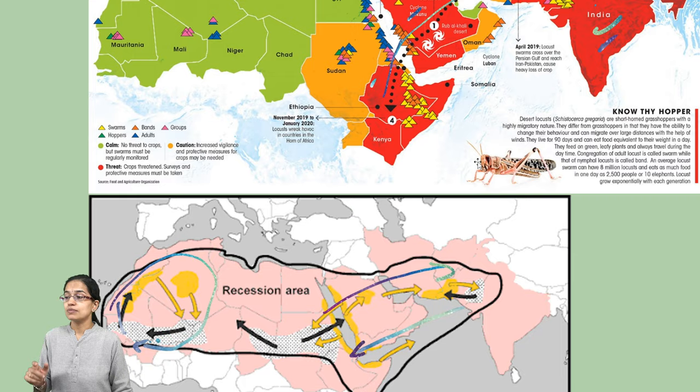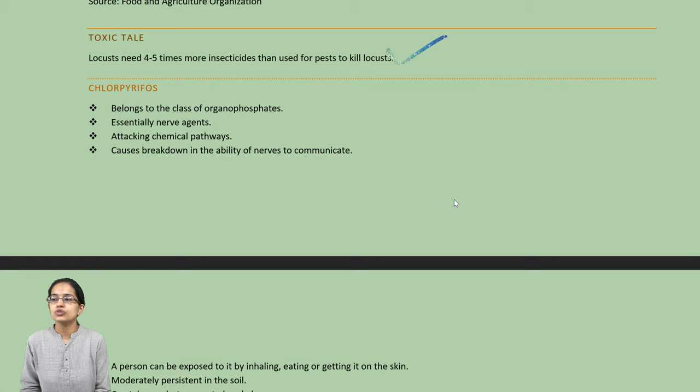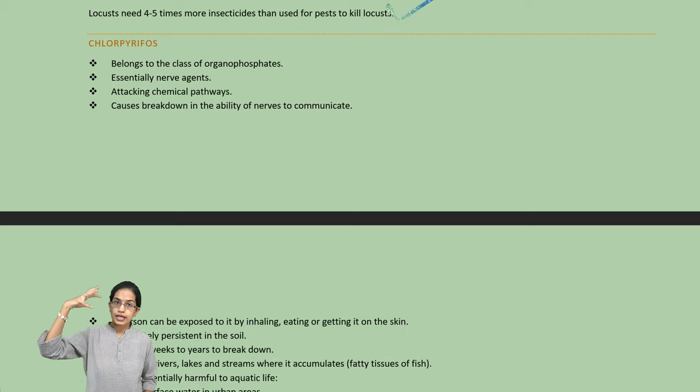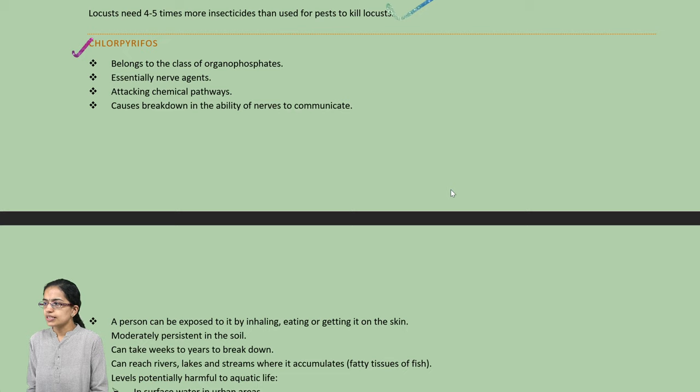To kill a locust, you need four to five times the higher level of insecticides that are normally used. In India, we have seen important developments where drones are used to spray insecticides in order to curb the proportion of locusts.